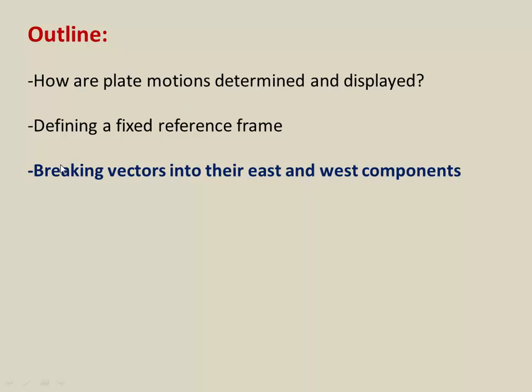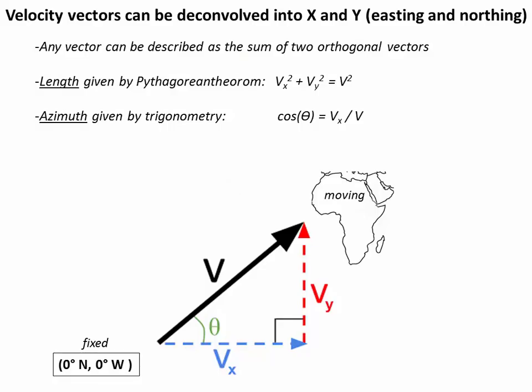So I'll close this video by talking about how we can break vectors into their east and west components using a little bit of vector algebra. So as I said earlier, here's our velocity vector, Africa moving away from some fixed coordinate. So we'll call that V. And we can break V into two perpendicular vectors. We'll call it Vx, which is essentially in an east-west direction, and we'll call it Vy, essentially in a north-south direction.